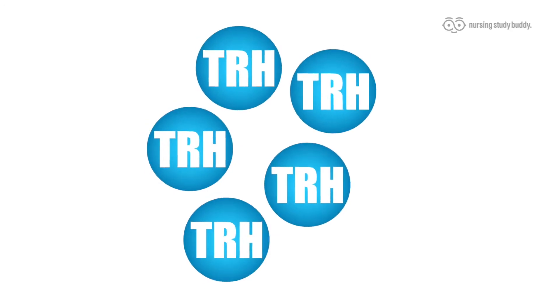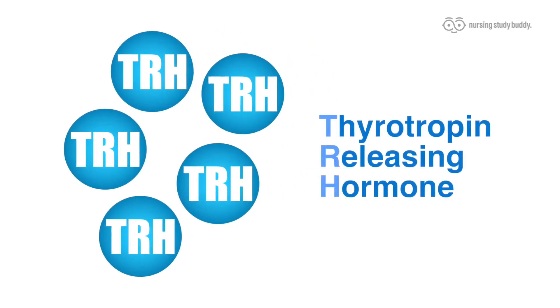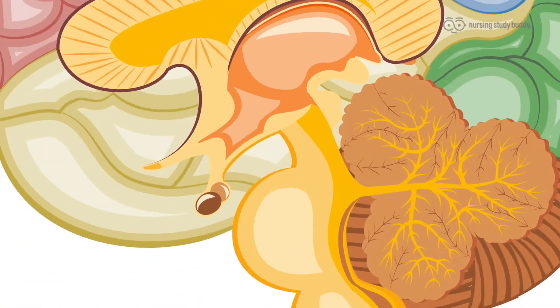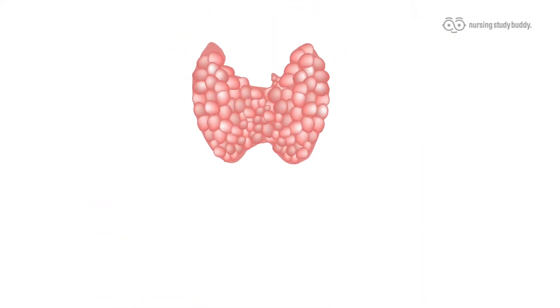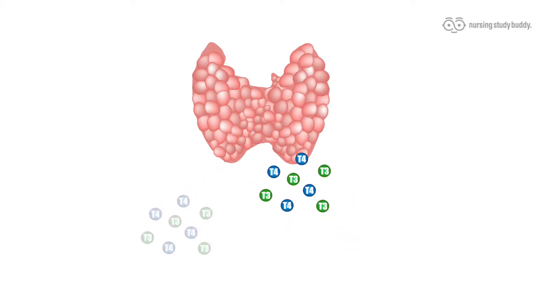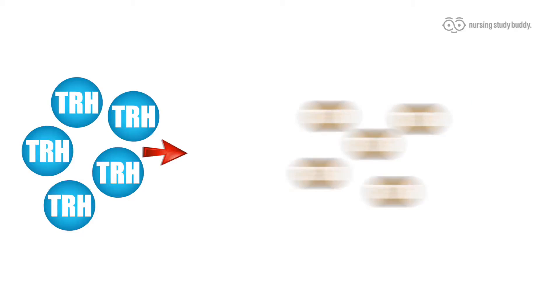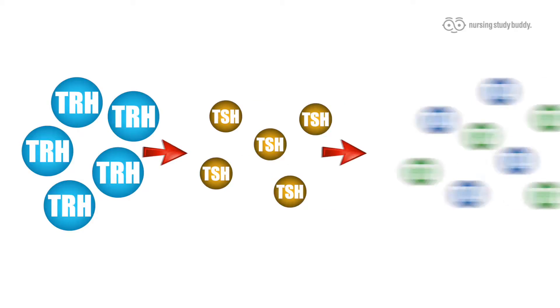For example, we already discussed TRH, or thyrotropin releasing hormone, which is made in the hypothalamus. This stimulates the anterior pituitary gland to release TSH, or thyroid stimulating hormone, which then initiates the production of T3 and T4 in the thyroid. This is an example of positive feedback — TRH stimulates TSH, which stimulates T3 and T4.